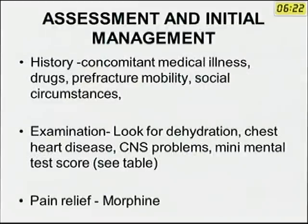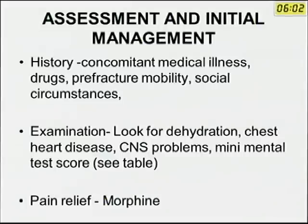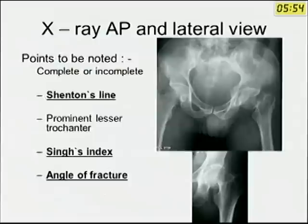To assess the fracture, initial management depends on history and examination. History must include concomitant medical illness, drugs, pre-fracture mobility, and social circumstances. On examination, look for dehydration, chest, heart, comorbid medical conditions determining the physiological age, CNS problems, and mini mental test scores. For quick pain relief, morphine or pethidine would be most useful for neck of femur fractures.